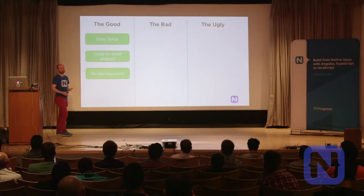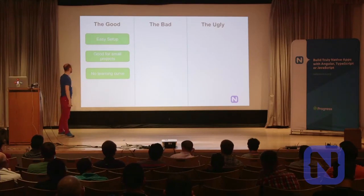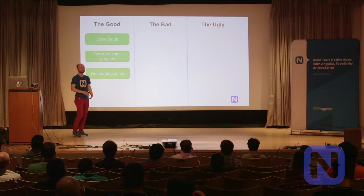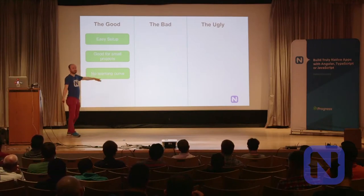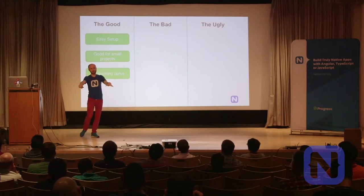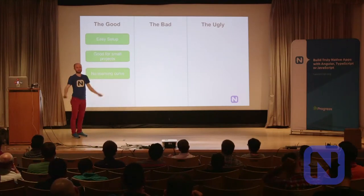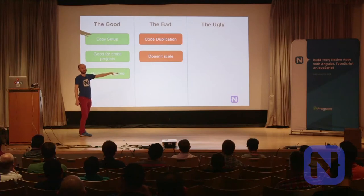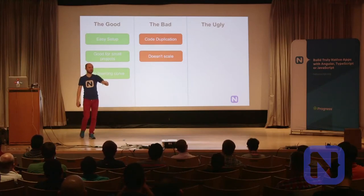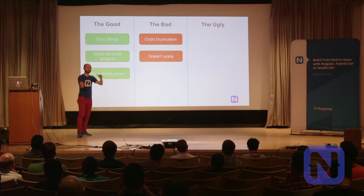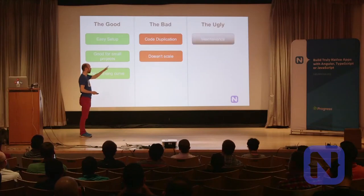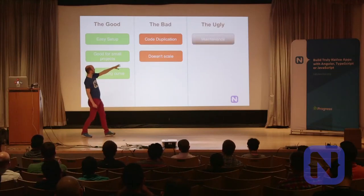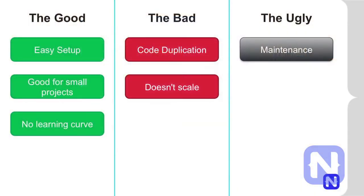The good thing about the multiple-projects approach: it's super easy to set up, everybody knows how to scaffold a project. It's pretty good for small projects — if you want to release by Wednesday and it's only a couple of screens, be my guest. No learning curve. The bad: you have code duplication and it doesn't scale. As soon as you have 50 screens, you have a massive mess of synchronization. The maintenance gets ugly — I chose this color because I find that gradient pretty ugly, so that's on purpose.